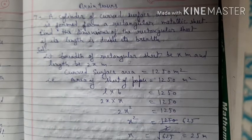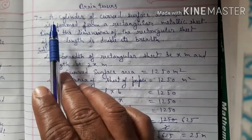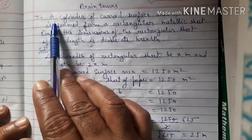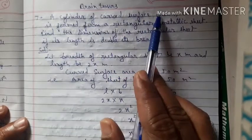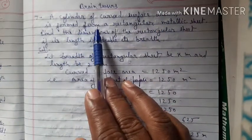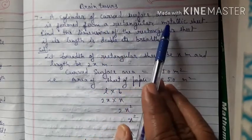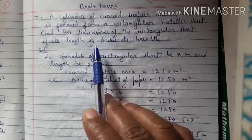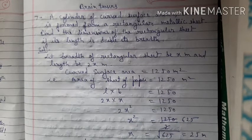Today we have brain teaser question number 7 of chapter 14 mensuration. The question says: a cylinder of curved surface area 1250 meter square is formed from a rectangular metallic sheet. Find the dimensions of the rectangular sheet if its length is double its width.